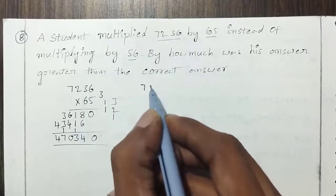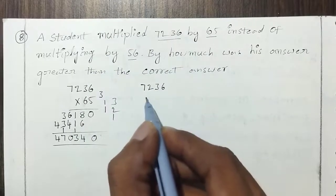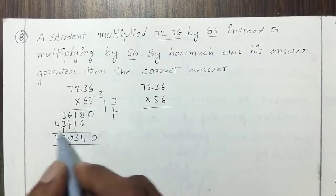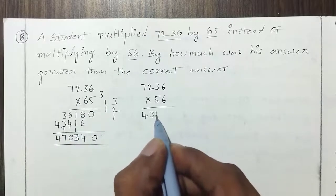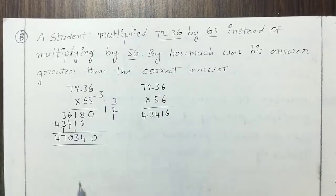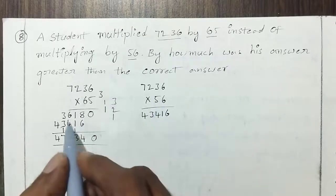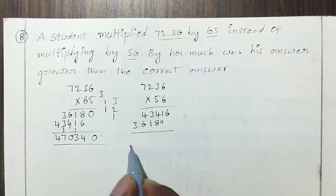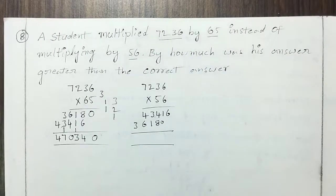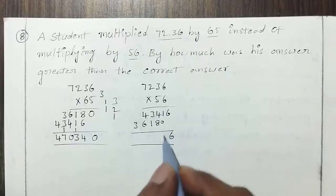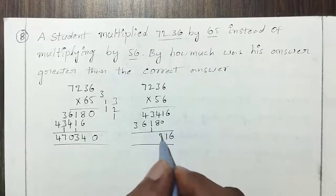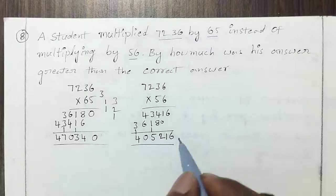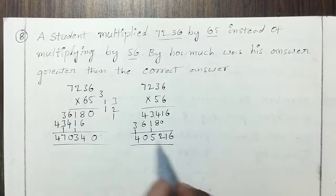We cross-multiply 7,236 by 65 to get the wrong answer. Working through the multiplication steps for both 65 and 56, we find the difference between the two answers — the student's answer is greater. The difference of these two answers is what we need.